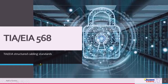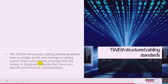The TIA EIA 568 standard is defined as covering how to design, build, and manage a cabling system that is structured — meaning the system is designed in blocks that have very specific performance characteristics. These blocks are integrated in a hierarchical manner to create a unified communication system. For example, work group plans represent a block with lower performance requirements than the backbone network block, which requires higher performance fiber optic cable in most cases.